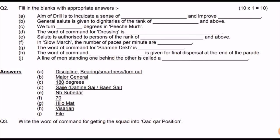General salute is given to dignitaries of rank Major General and above, only when they are in full uniform and you are also in full uniform with your beret. In Peache Mode, you turn 180 degrees. The word of command for dressing is 'Saj Daine Saj.' Salute is given to persons of Naib Subedar rank and above. General salute from rifle is studied in the B part. In slow march, the number of paces per minute is 60 to 70.